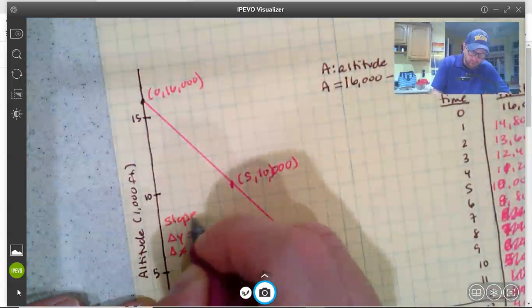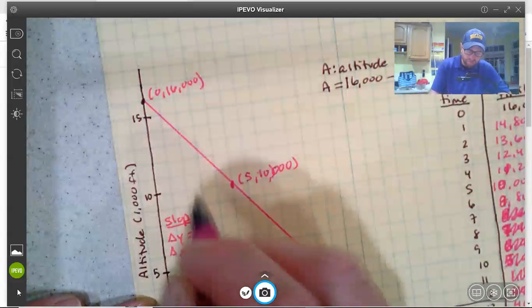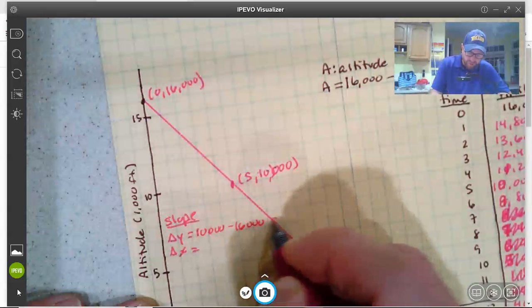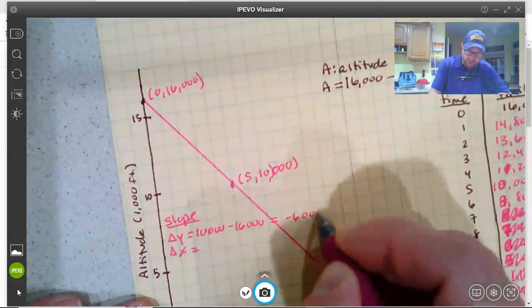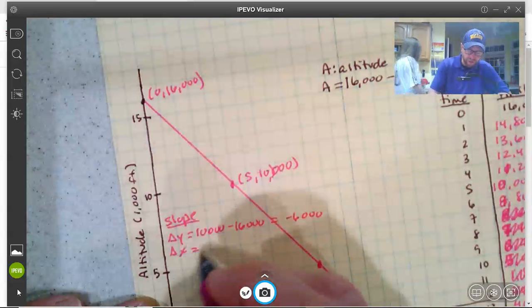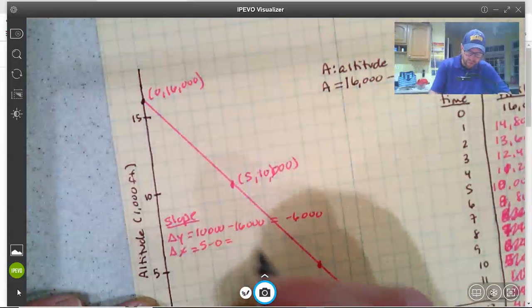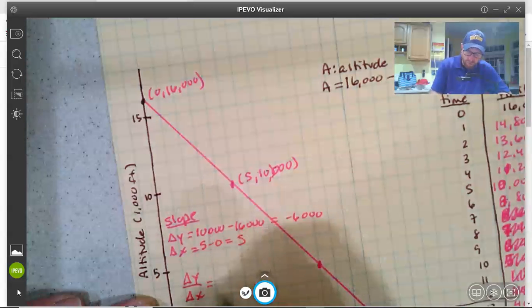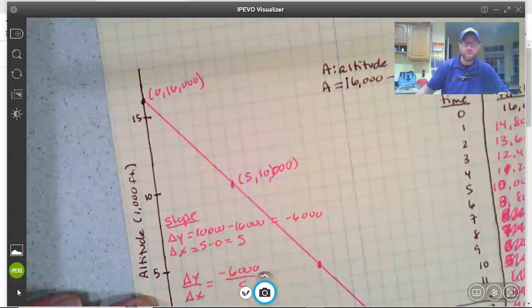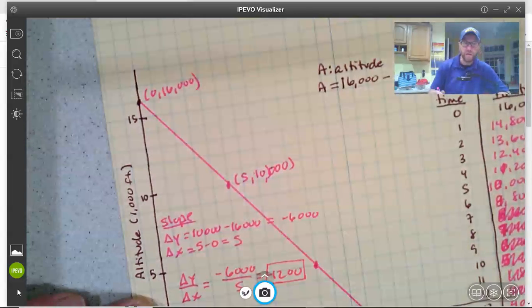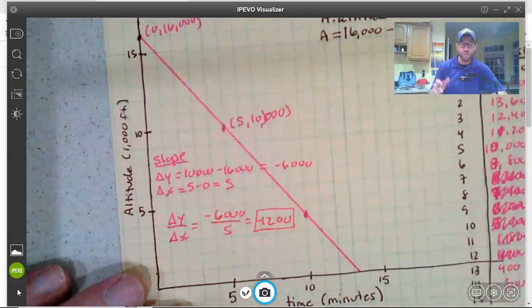So I'll do my change in Y change in X. So our change in Y is 10,000 minus 16,000, which is negative 6,000. Our change in X is five minus zero, so that is five. So our slope change in Y over change in X is negative 6,000 over five, which simplifies to negative 1,200. But notice we already know that number. It's the plane is descending at 1,200 feet per minute.